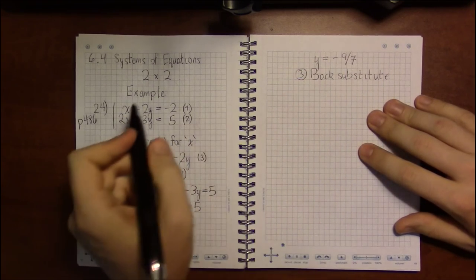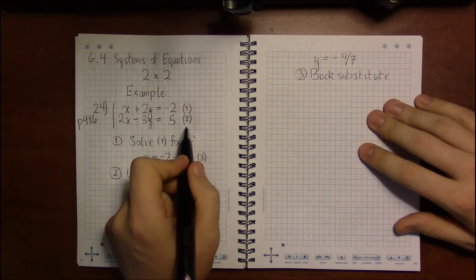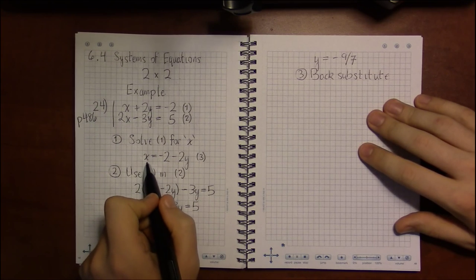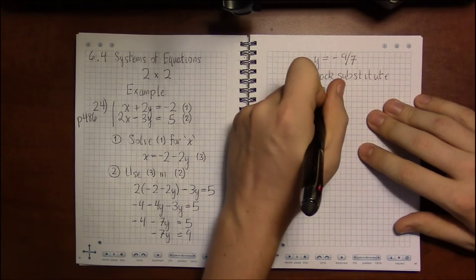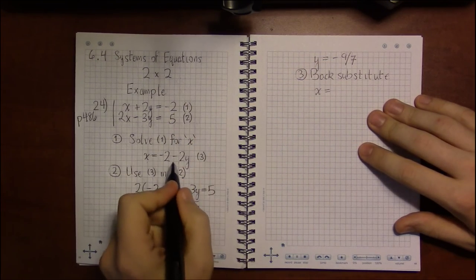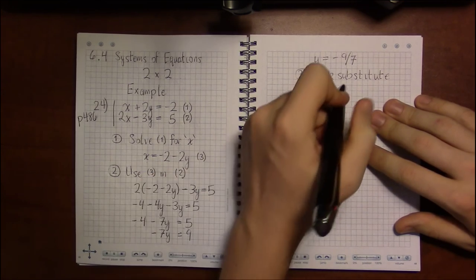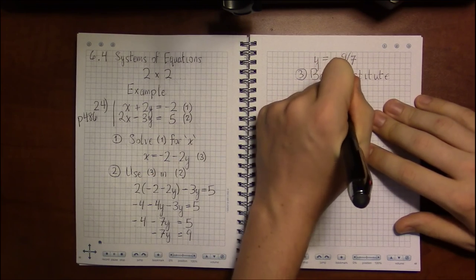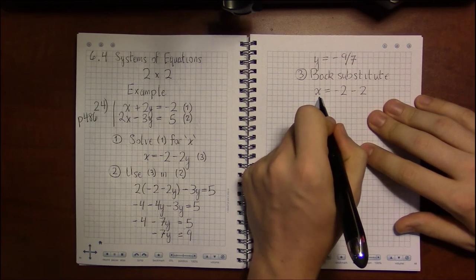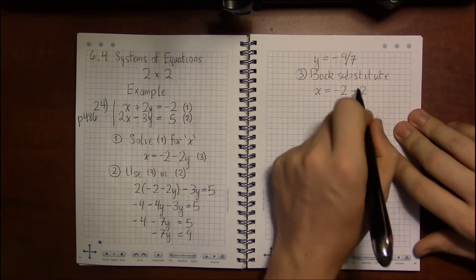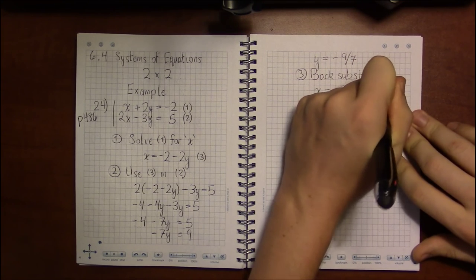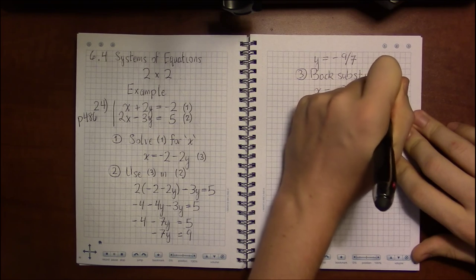Now we could substitute this value of y into equation 1 or equation 2, but the easiest thing to do is to put it back into equation 3, because then we are just doing arithmetic. We don't have any algebra to do here. So we have x equals minus 2 minus 2 times minus 9 over 7.